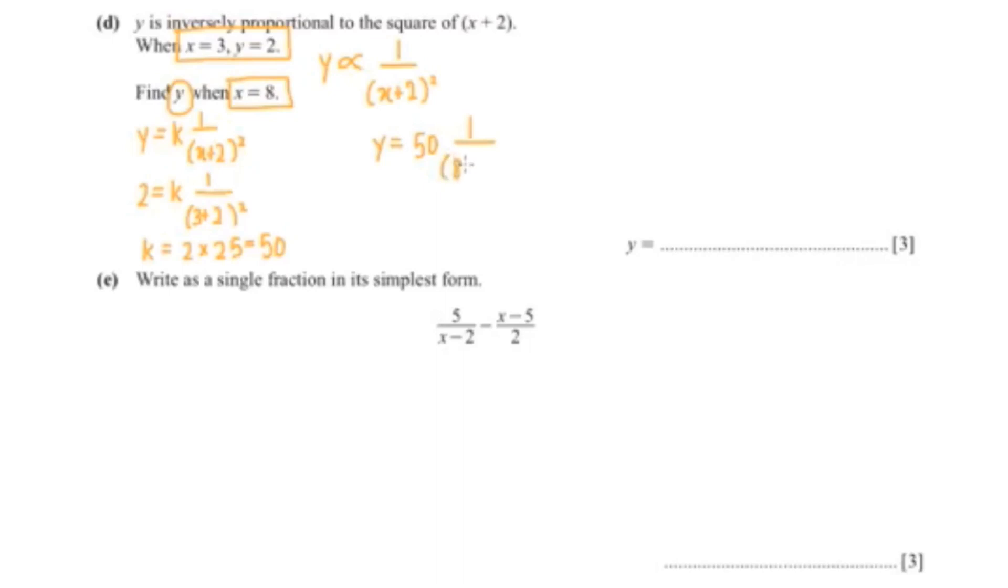So 8 plus 2 squared. So 50 over 100 is 1 over 2, or you could write it as a decimal, which is 0.5. So our y is 1 over 2.